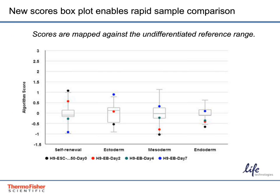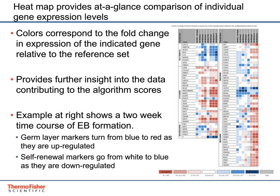This is one of our favorite new software features, requested by one of our customers in the UK. This heat map shows up-regulation or down-regulation of each gene in the scorecard panel relative to the undifferentiated reference set. Shown here is a two-week time course of EB formation using H9 ESCs. As expected, the trend is toward down-regulation of self-renewal genes and up-regulation of germ layer-associated genes over time. There are a few exceptions such as Lefty1, Lefty2, and Nodal — those genes are not up-regulated during spontaneous differentiation but are included in the panel since they respond well to directed differentiation. The panel was chosen for sensitivity to both spontaneous and directed differentiation methods.